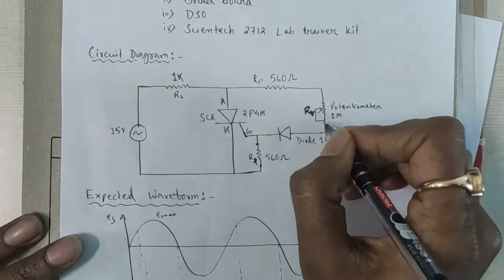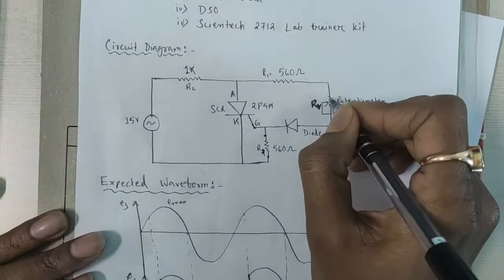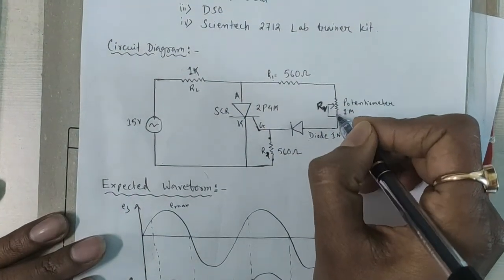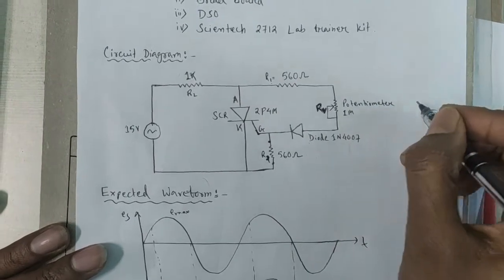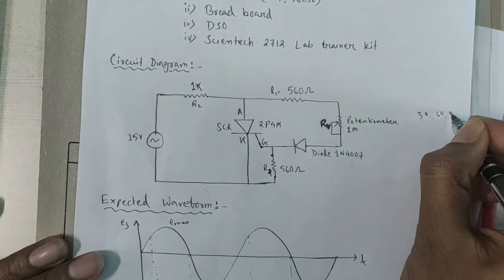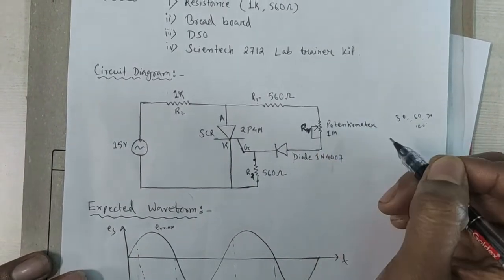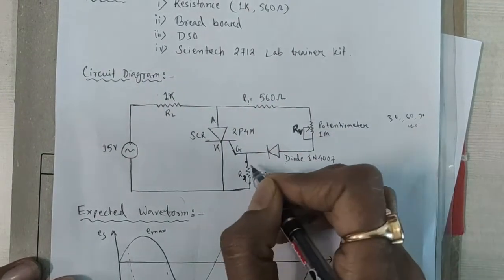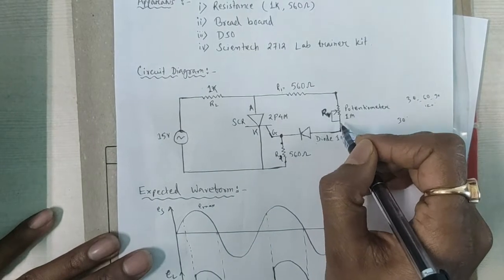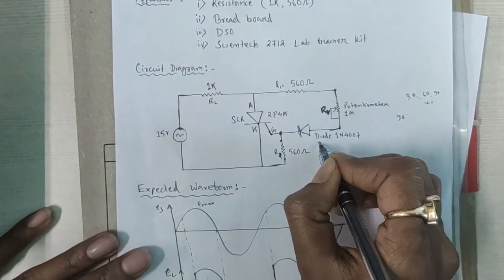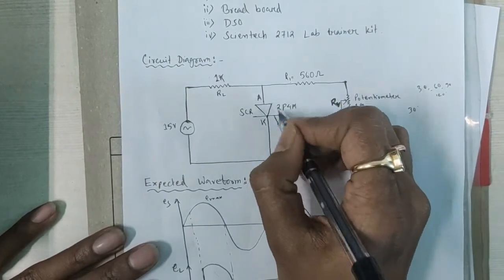We can change the resistance by varying the knob of this potentiometer. We can also change the triggering angle by varying this knob. The triggering angle may be 30 degrees, 60 degrees, 90 degrees, or 120 degrees — it will increase like this. When RV is minimum, high current will flow through RV from the input, then through R1, then through the potentiometer, then through diode D1 to the gate terminal of the SCR. When RV is minimum, it will turn on the SCR.